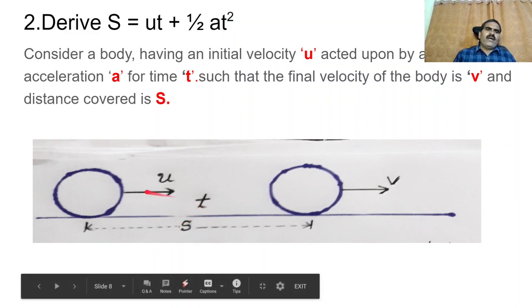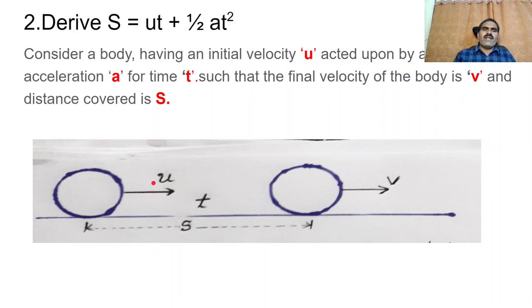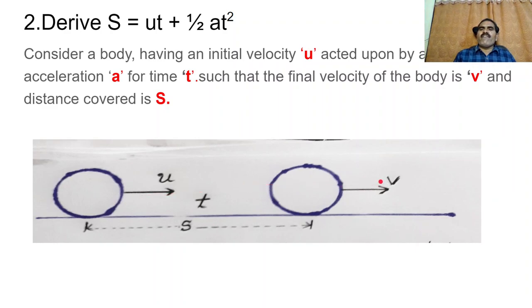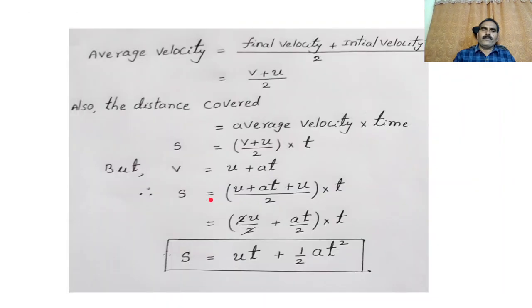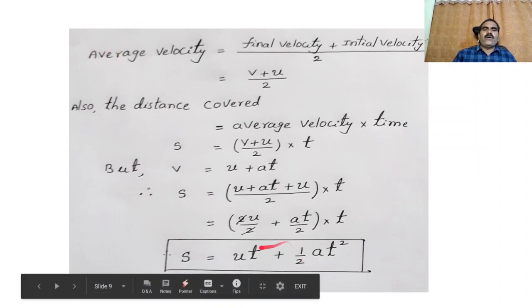Let U be the initial velocity. Let V be the final velocity after T seconds. Let S be the distance travelled by this moving body in T seconds. Our aim is to find out S equals UT plus half AT square.